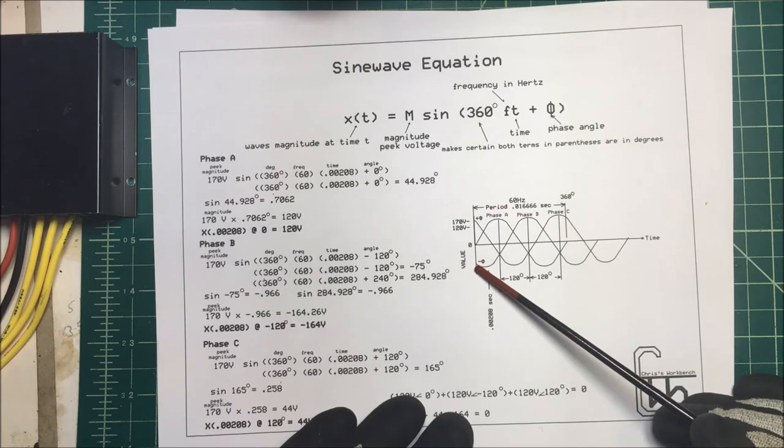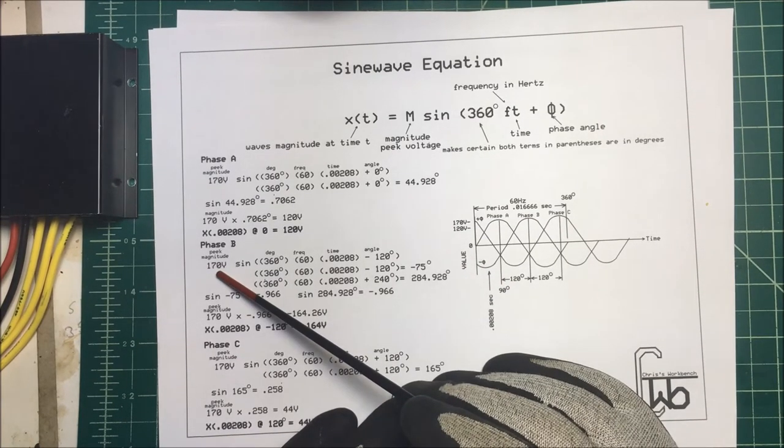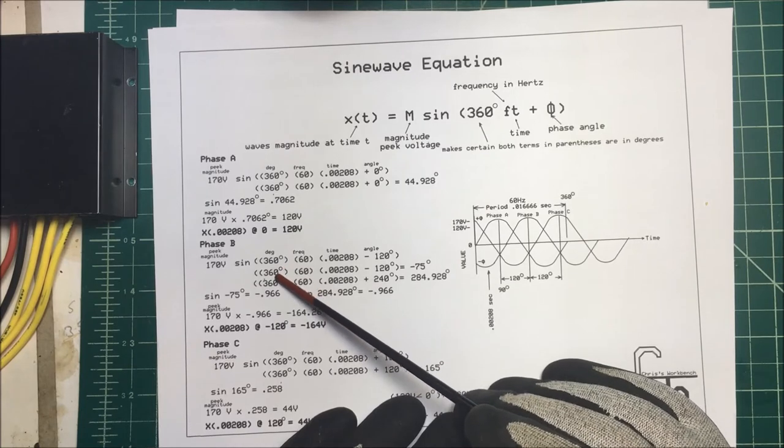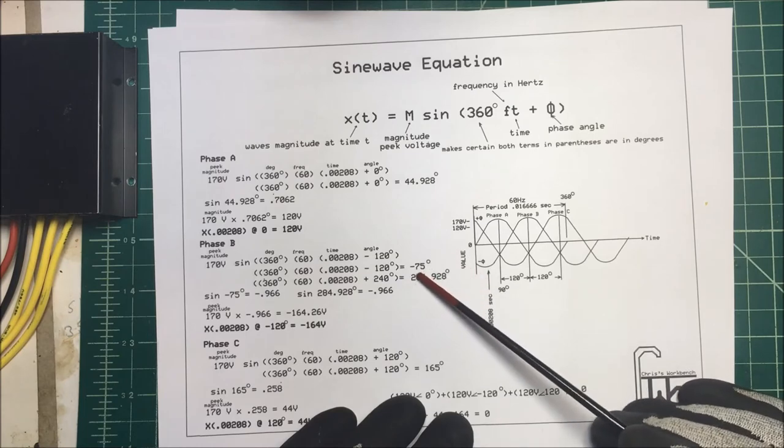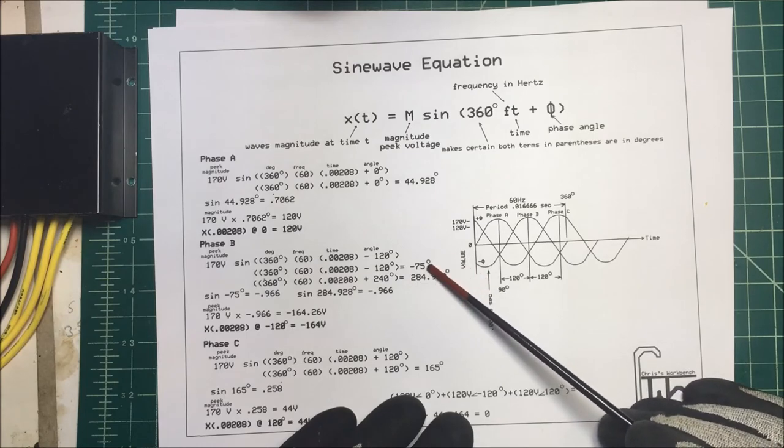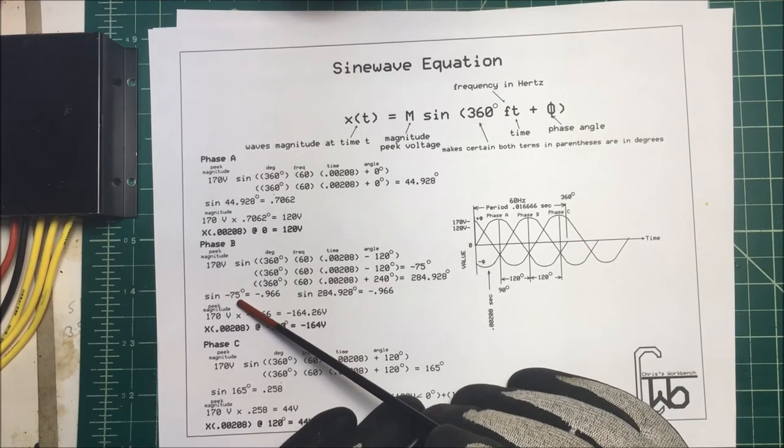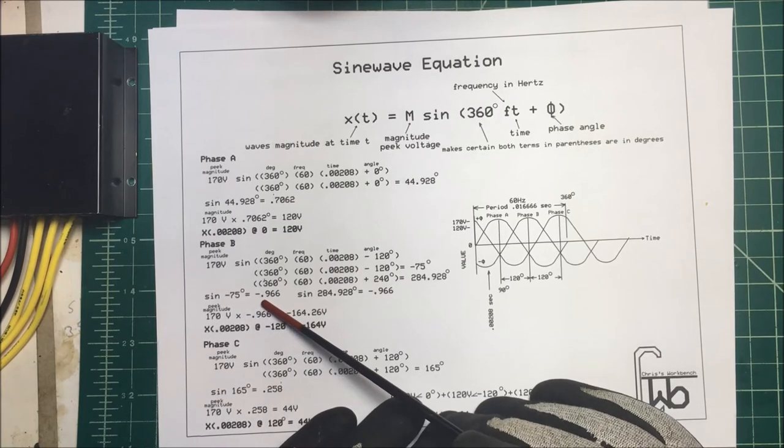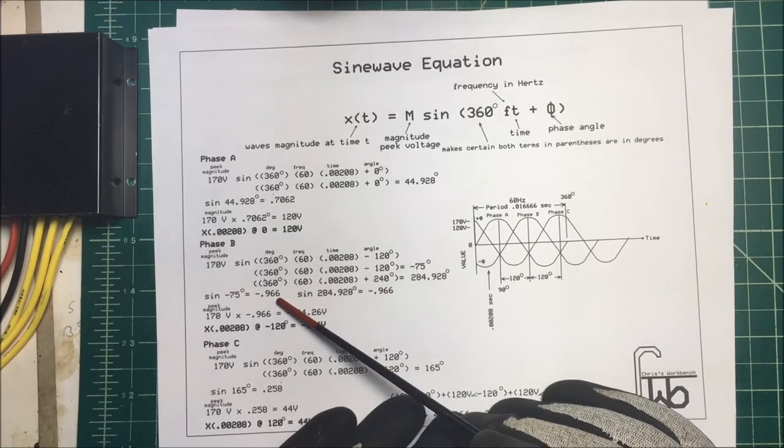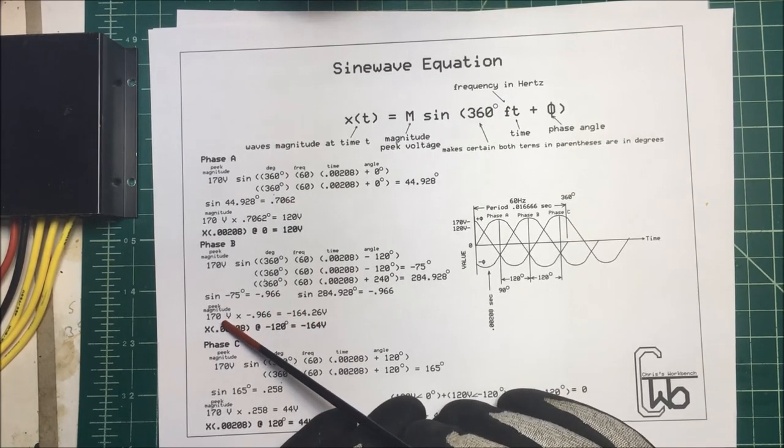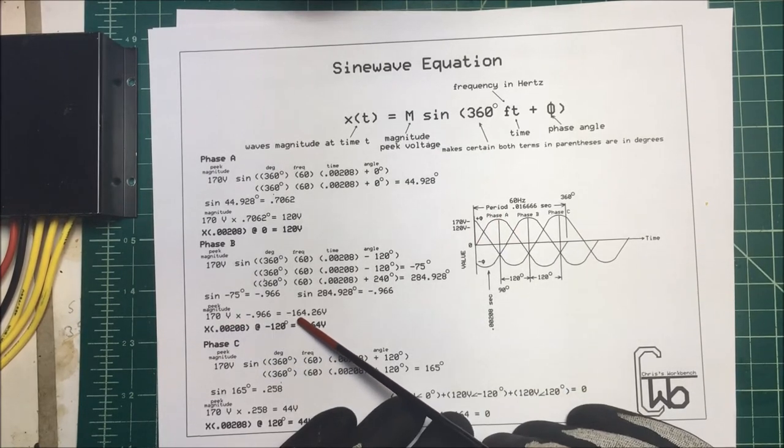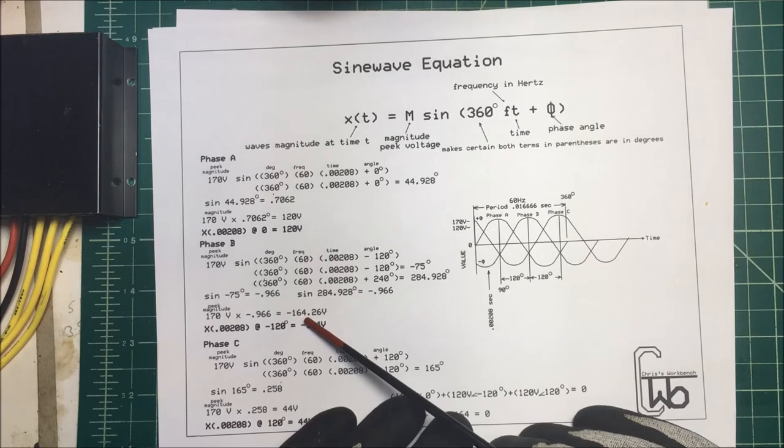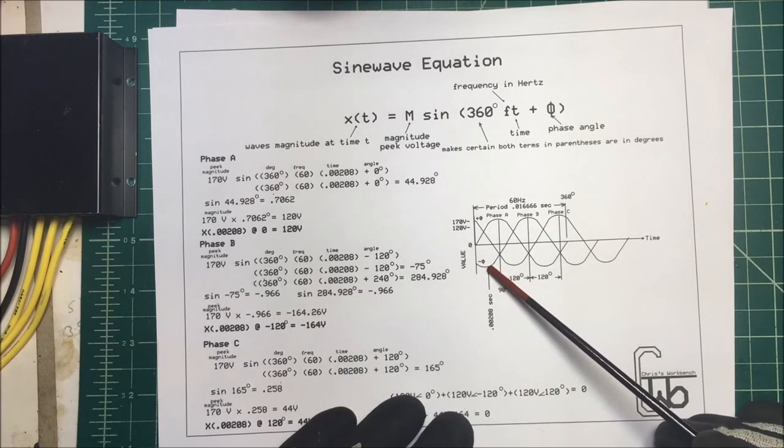Phase B is lagging by 120 degrees. So we take our 170 volts and we take the 360 times our frequency times the time minus 120, and that comes out to minus 75 degrees. We take our sine of minus 75 degrees and that's minus 0.966, and then we multiply that by our peak value of 170 volts and that comes out to minus 164 volts.